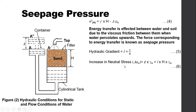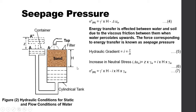Therefore, the increase in neutral stress Δuw = z × γ_w, which equals i × h × γ_w since z = i × h (Equation 6). Substituting this value of Δu into Equation 4, we get Equation 7: effective stress at h equals γ' × h − i × h × γ_w. So effective stress is now given by Equation 7.